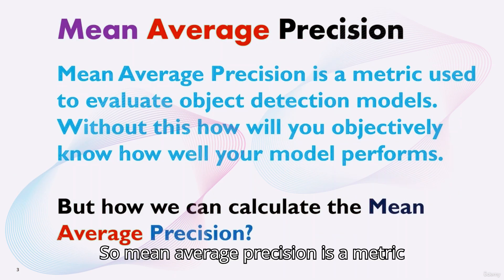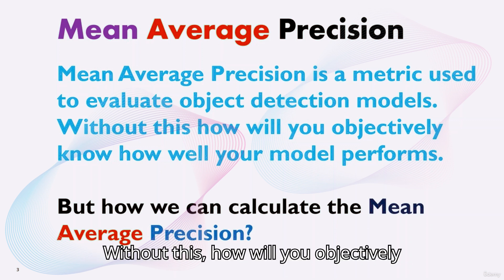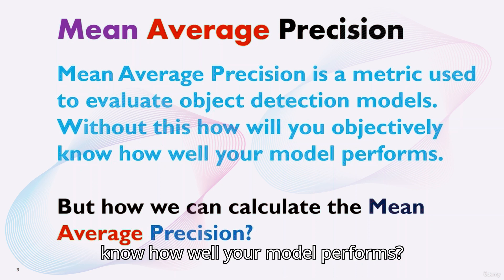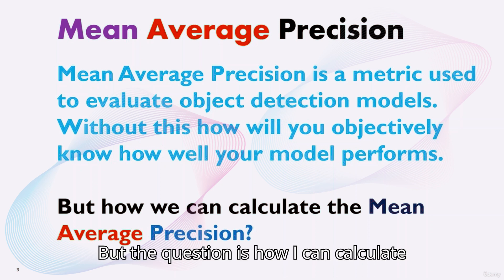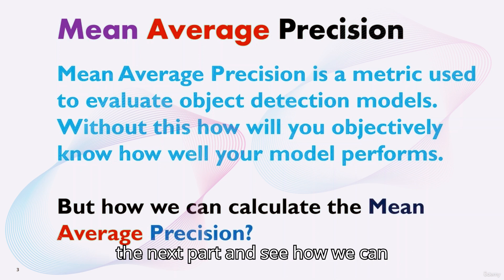Mean average precision is a metric used to evaluate object detection models. Without this, how will you objectively know how well your model performs? Let's go to the next part and see how we can calculate mean average precision.